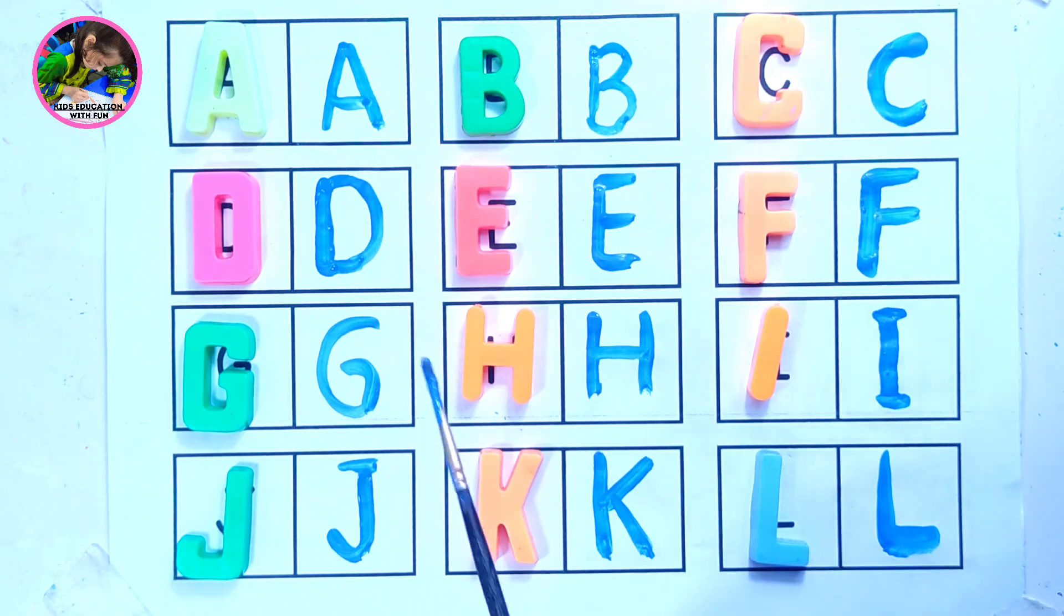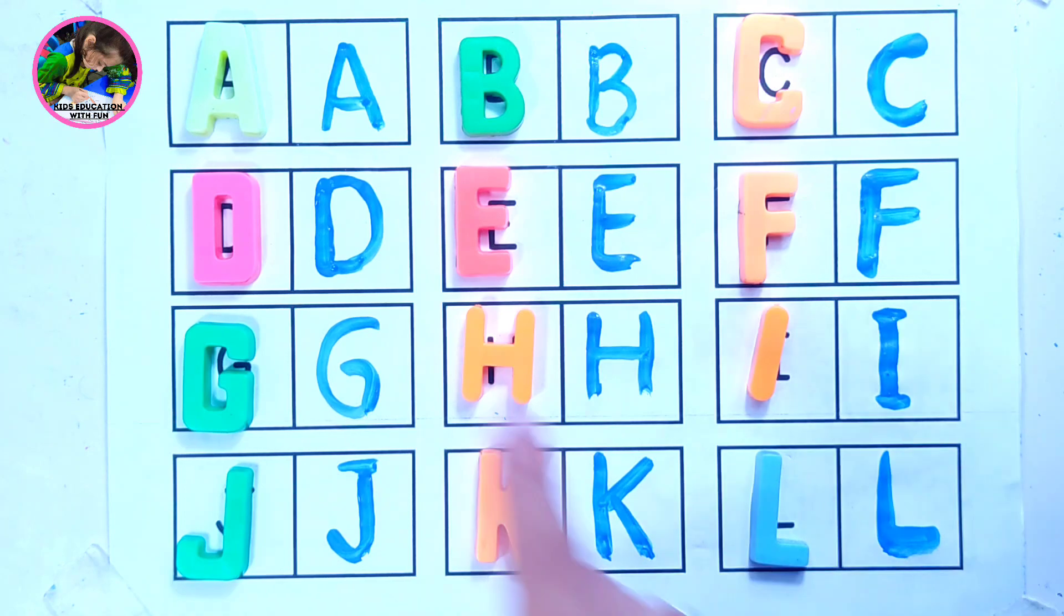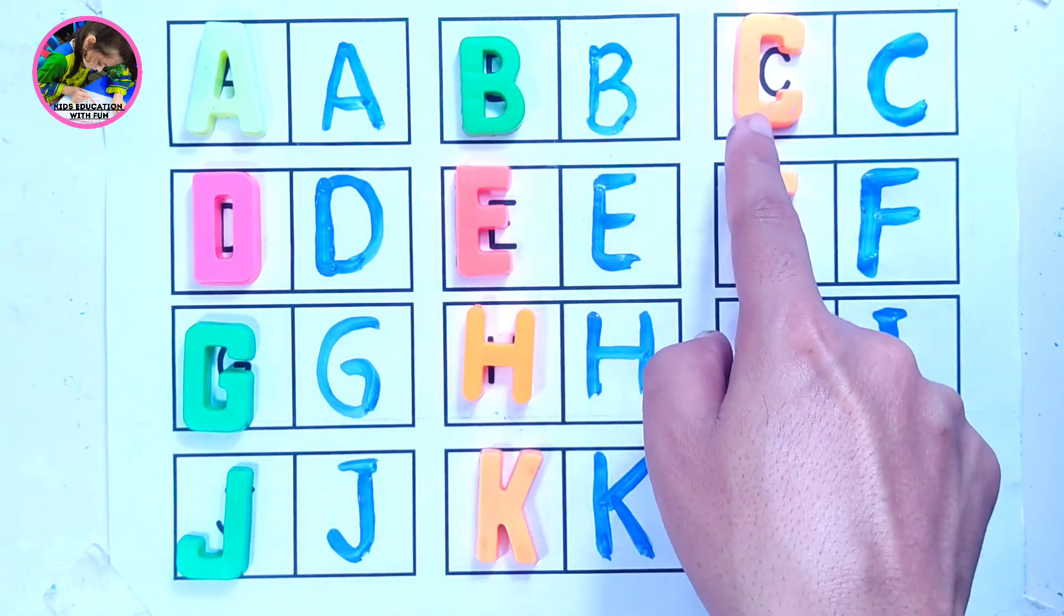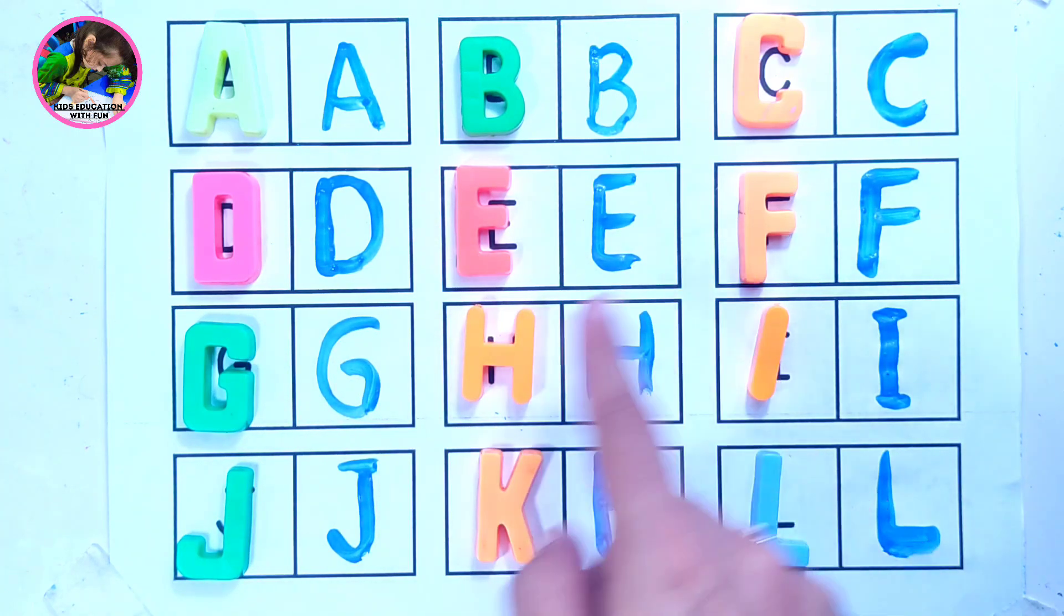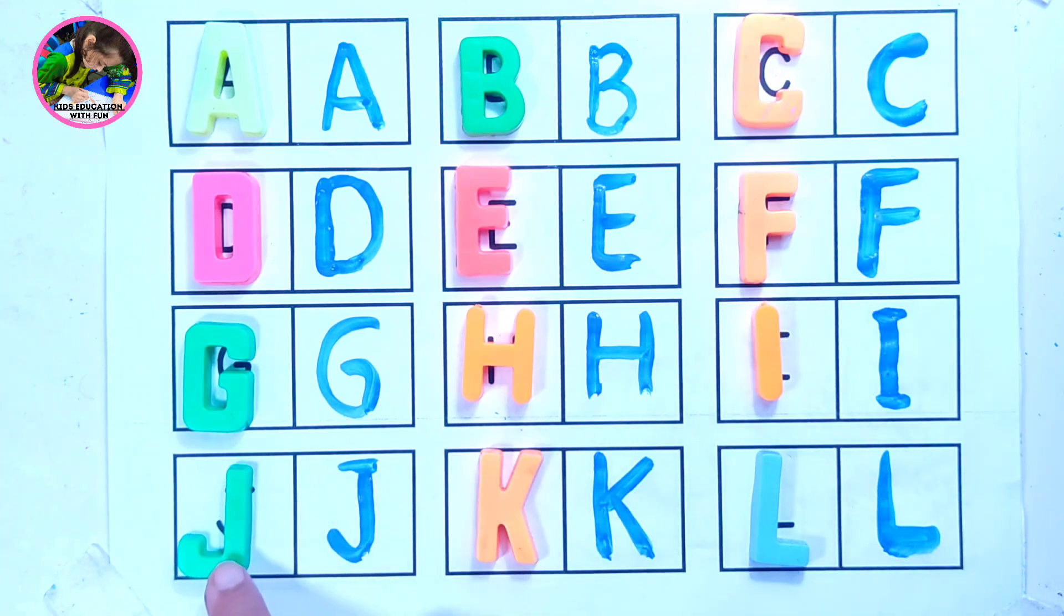So we have just drawn from A to L. Let's revise. A, B, C, D, E, F, G, H, I, J, K, L.